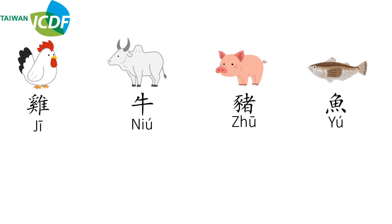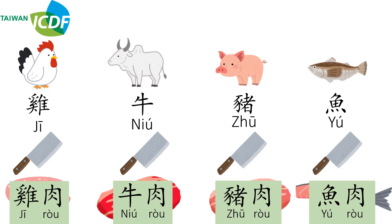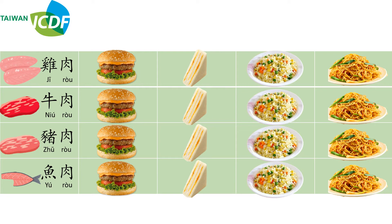There are many different types of food, and let's learn the names of the animals first: 鸡 (chicken), 牛 (cow), 豬 (pig), 鱼 (fish). After those animals have been processed, the meats are called 鸡肉, 牛肉, 猪肉, 鱼肉. Now let's practice combining those four different types of meats with food words.